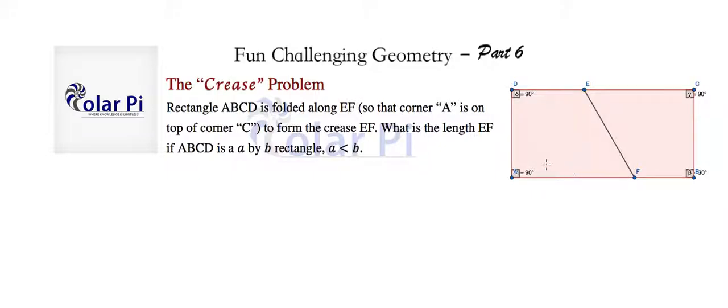The only thing we know is that the length of the shorter side of our rectangle is little a, and the length of the longer side is little b. So our answer for the length of crease EF has to be in terms of little a and little b.